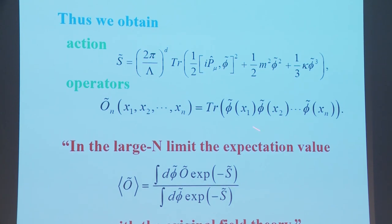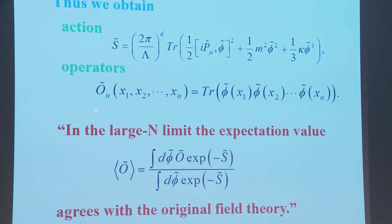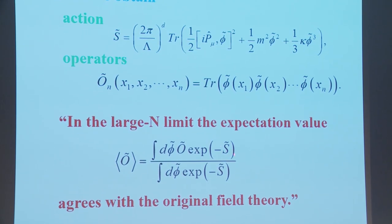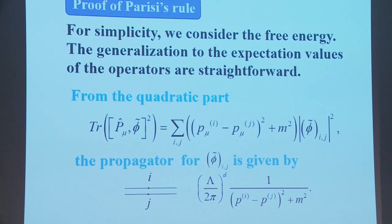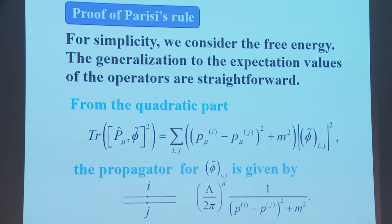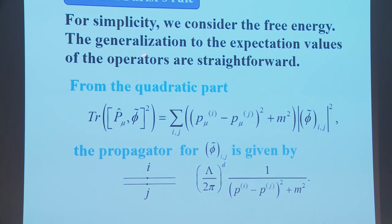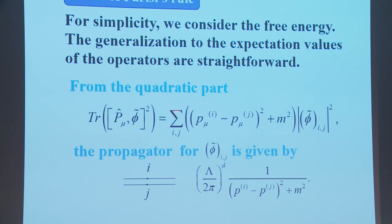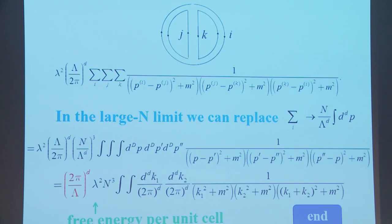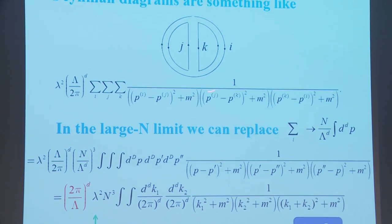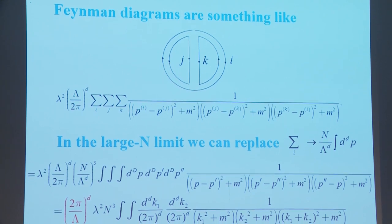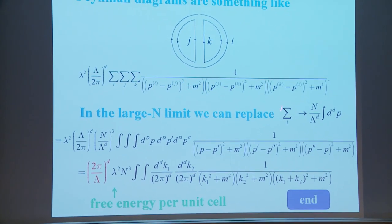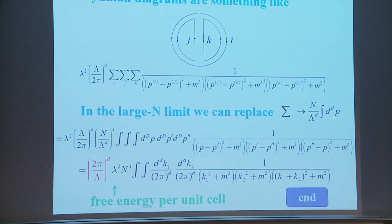The statement is that in the large-N limit, the expectation value of the operator agrees with the original field theory. The proof is simple: from the quadratic part we have a propagator, and Feynman diagrams for the free energy arise — for example, two-loop diagrams. In the large-N limit, we can replace summation over i with integration over p, and the result follows from the fact that just two momenta are independent.